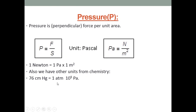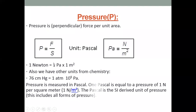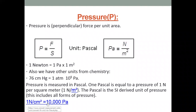Pressure is measured in Pascal. One Pascal equals one Newton per meter squared. The Pascal is derived from force and area. Also important: one Newton per centimeter squared equals 10,000 Pascal.